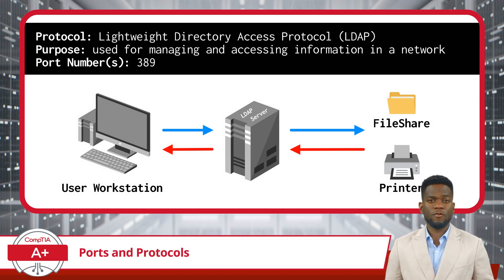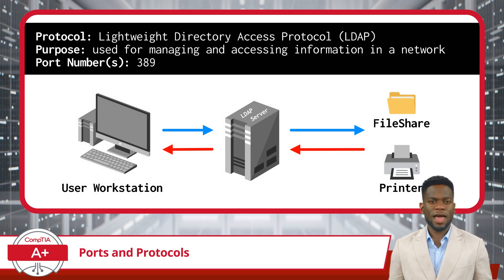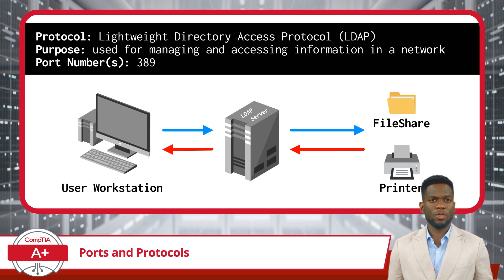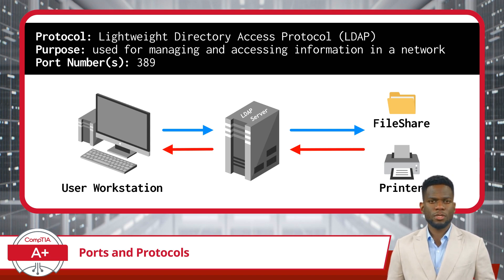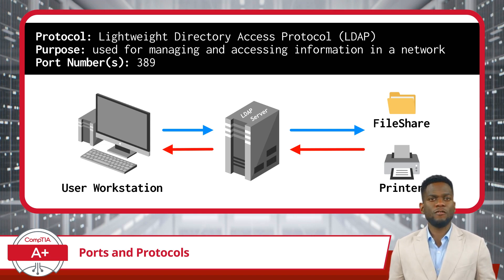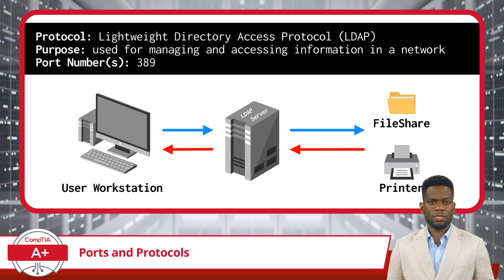Another protocol available is LDAP, or Lightweight Directory Access Protocol. This is a protocol used for managing and accessing information in a network — like a phone book for a network — helping to organize and find information about resources such as users and services. LDAP uses port 389 to communicate, allowing network administrators to quickly find and manage information about users and resources, especially useful in large organizations.